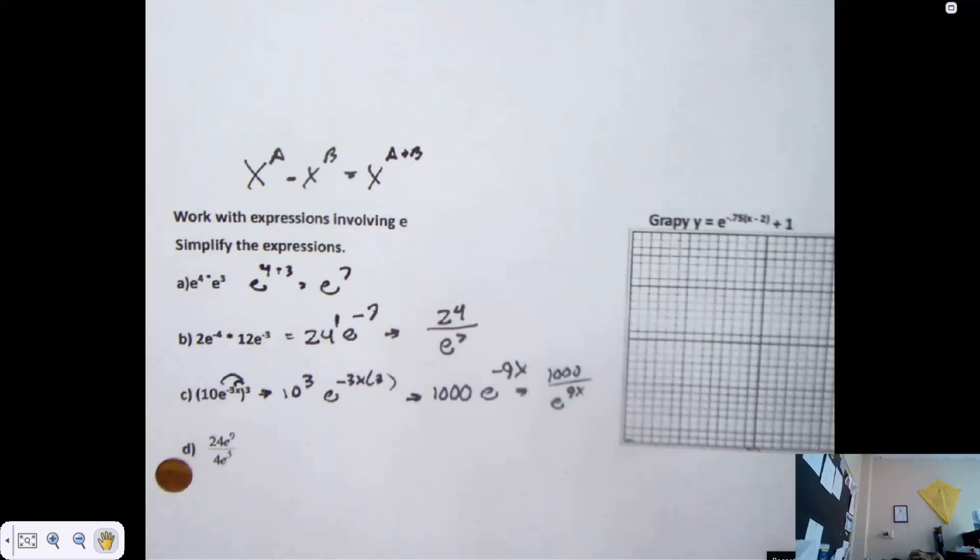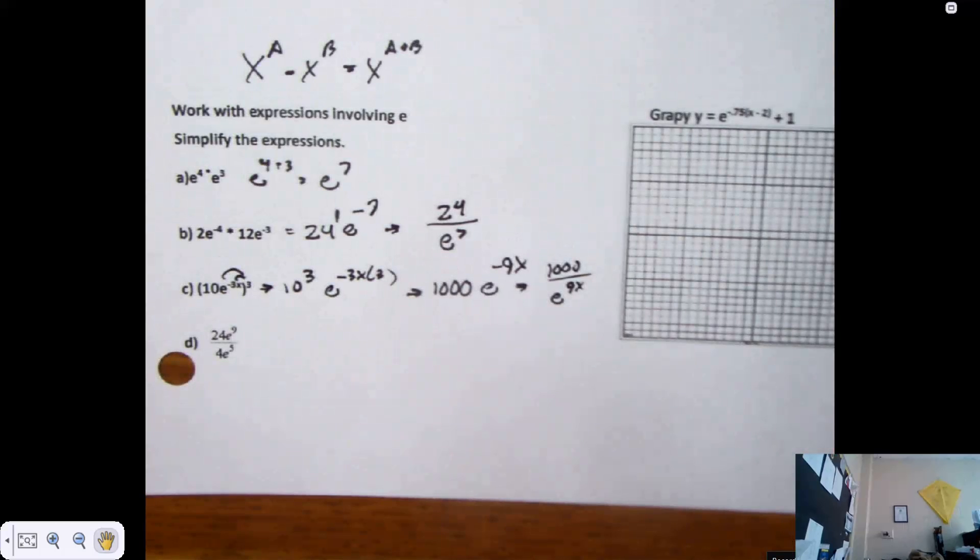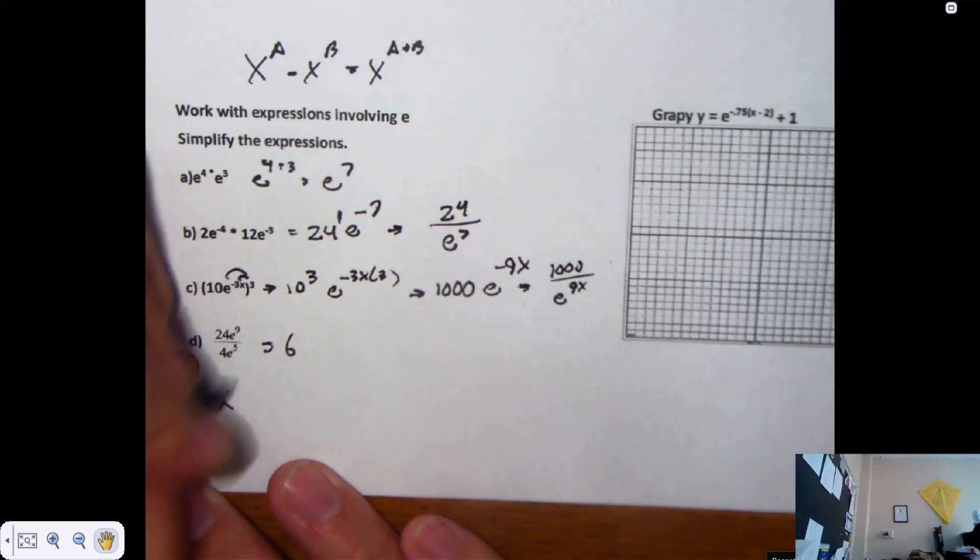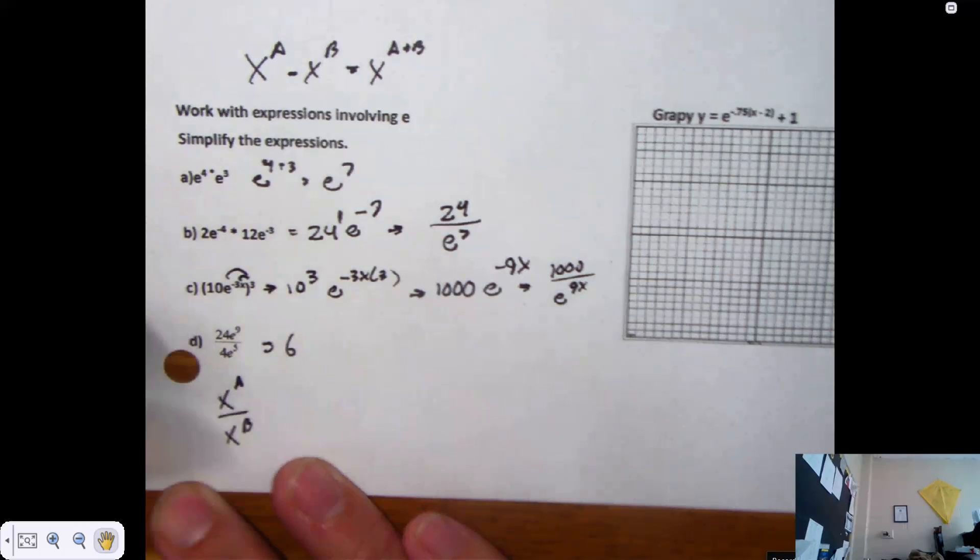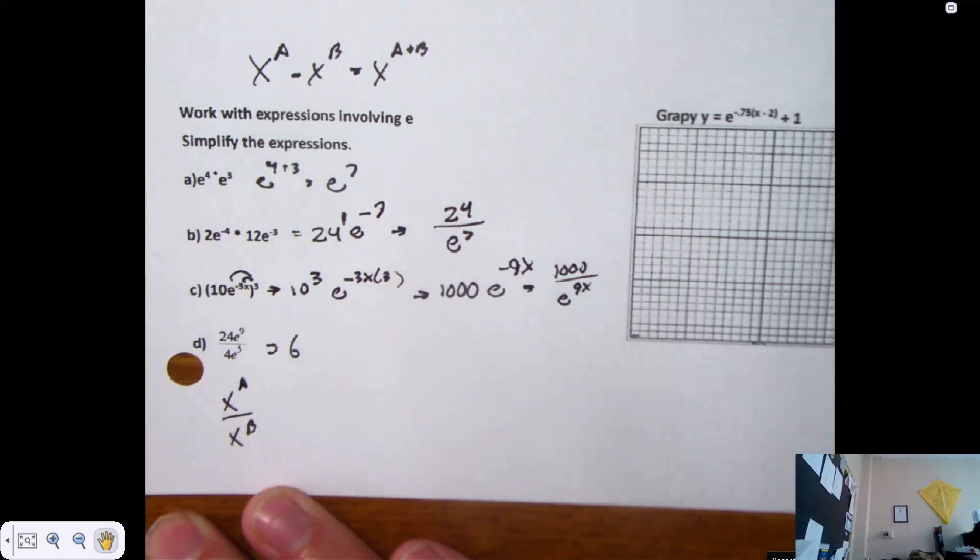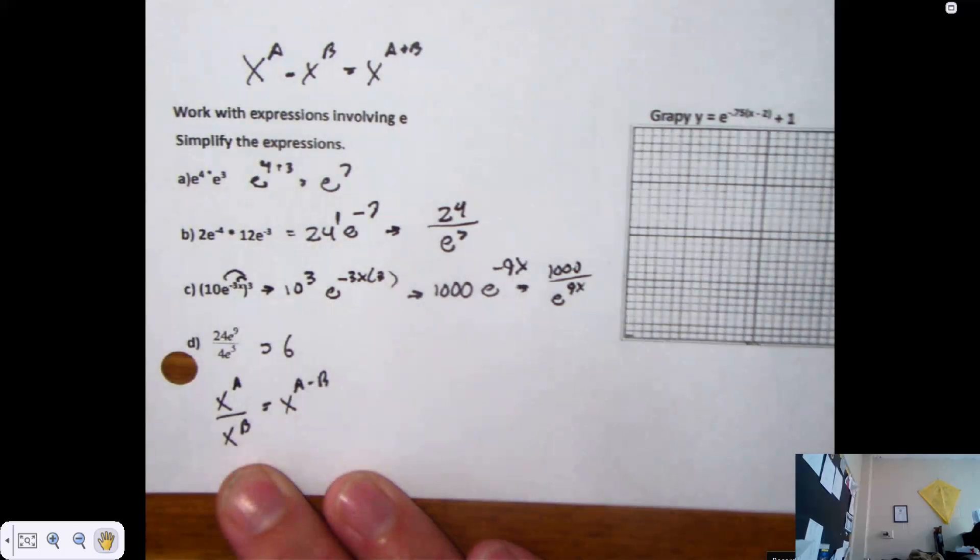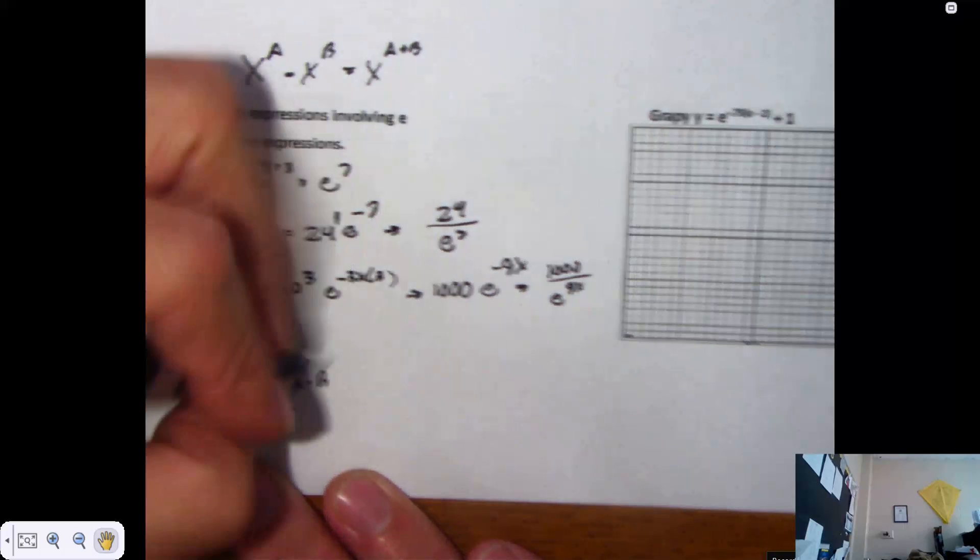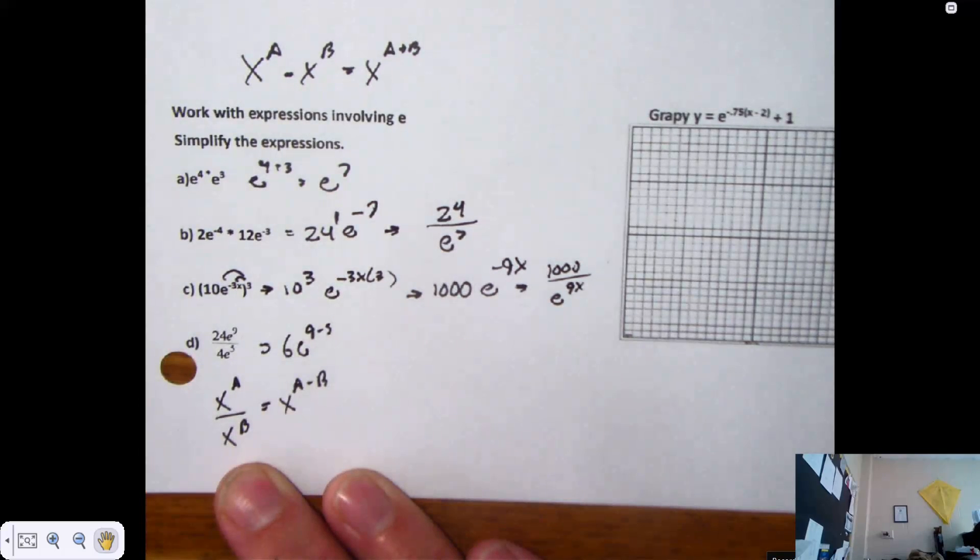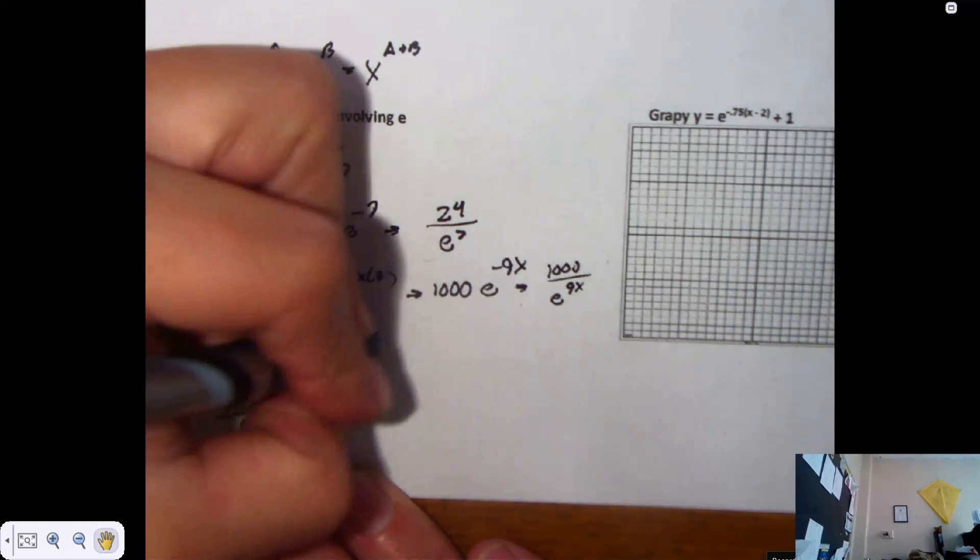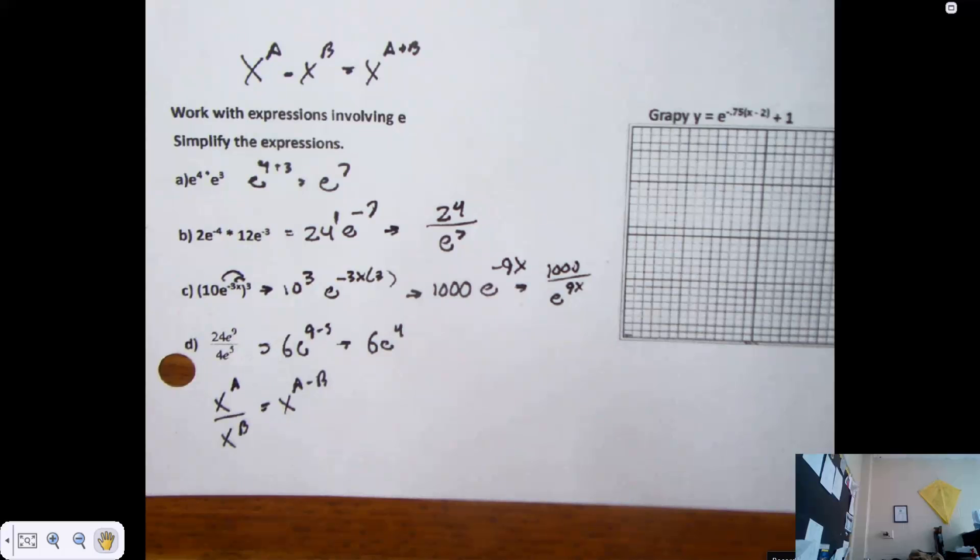All right. D is a simple simplification problem. It's 24 over 4. 6. Now, you have properties. X to the A over X to the B. Like terms in division. What do you do with the exponential space? You subtract. X to the A minus B. So, what's bigger? E to the 9th or E to the 5th? So, take away from E to the 9th. What is 9 minus 5? 4. So, 6E to the 4th power. It's just simplification. All it is. Trying to reinforce exponential rules.